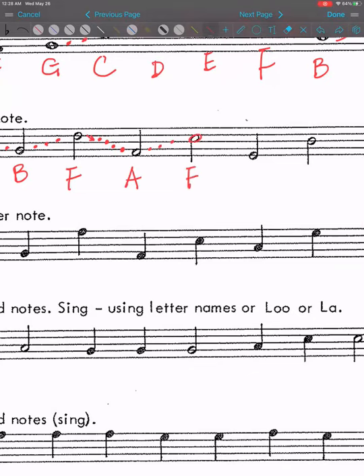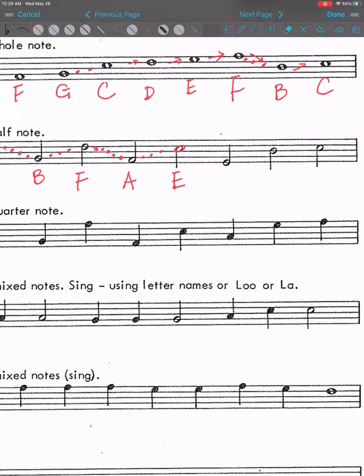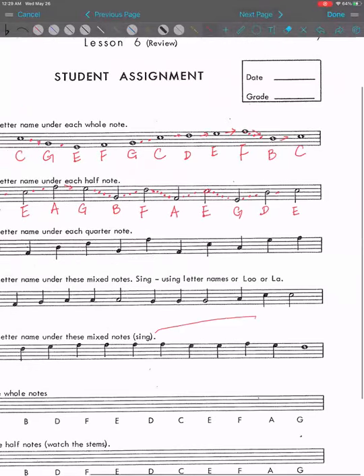It's right here. I know they look kind of confusing. All right. Going down E, D, C, B, A, G. Going up G, A, B, C, D. And then D going up again is E. Now next slide.